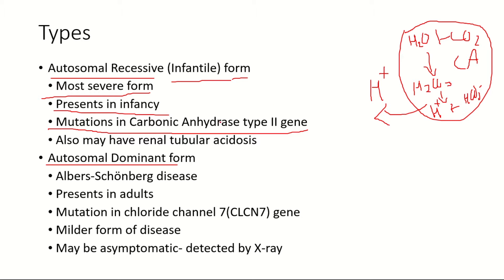The proton comes out of the cell and creates the acidic environment required for destruction of the bone. When there is a mutation in the carbonic anhydrase type 2 gene, the enzyme cannot function, protons are not formed, there is no acidic environment, and the osteoclast cells cannot function — resulting in osteopetrosis. This enzyme is also present in renal tubular cells; when defective, the tubular cells cannot secrete protons, causing renal tubular acidosis.